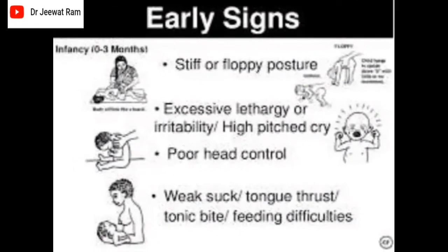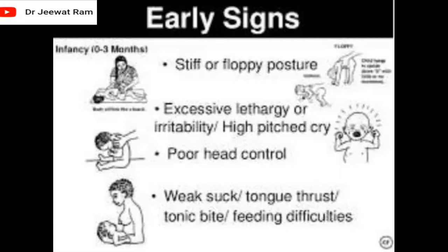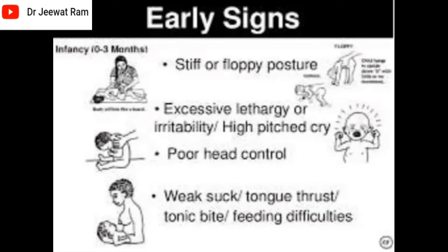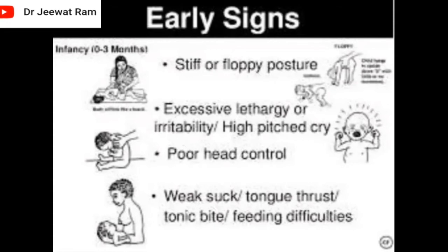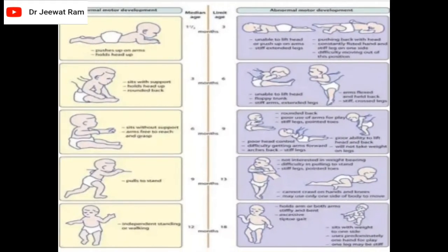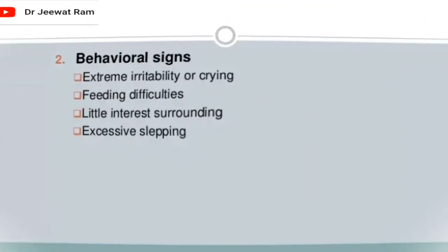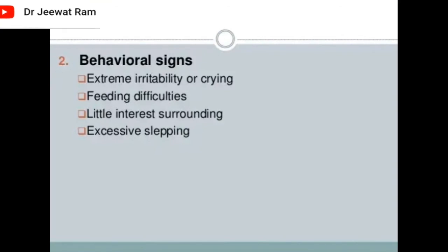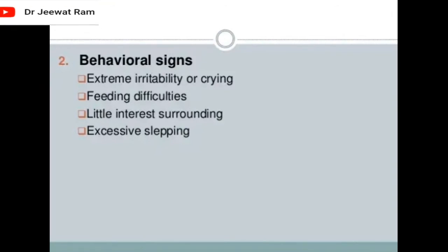Early signs in infancy (zero to three months) include stiff or floppy posture, excessive lethargy or irritability, high-pitched cry, poor head control, weak suck and tongue thrust, tonic bite, and feeding difficulties. Behavioral signs include extreme irritability or crying, feeding difficulties, and little interest in surroundings with excessive sleeping.